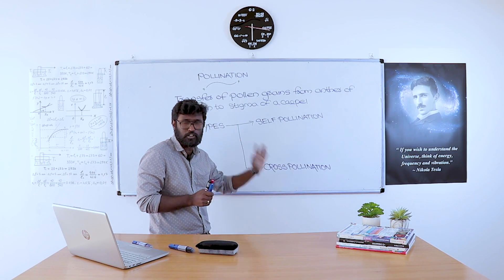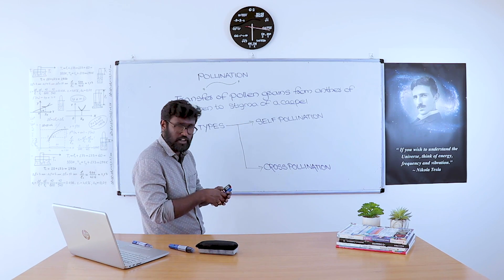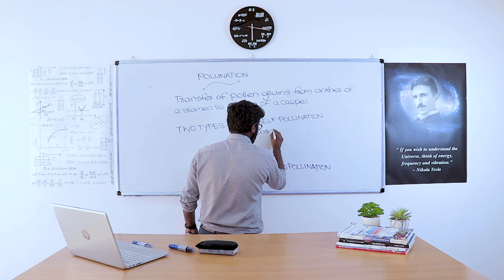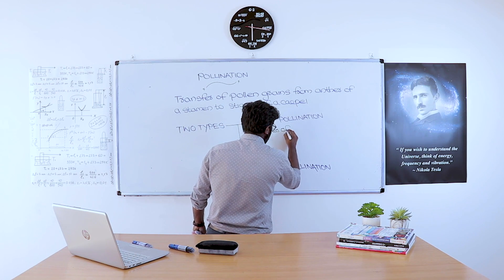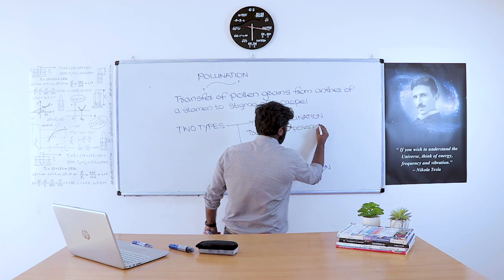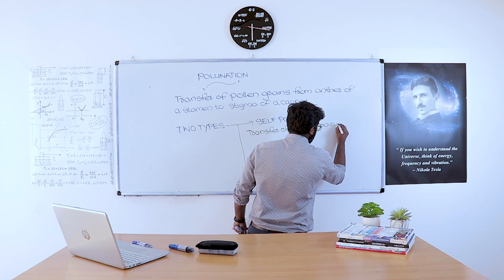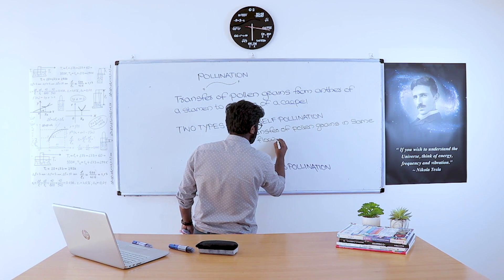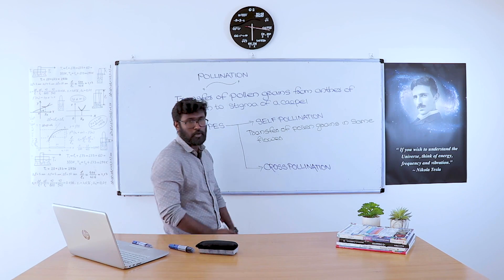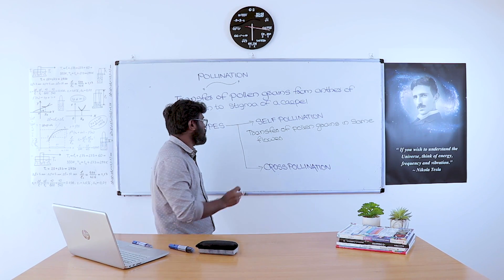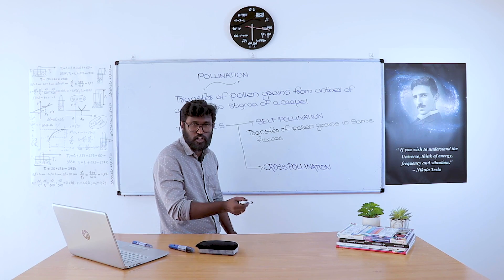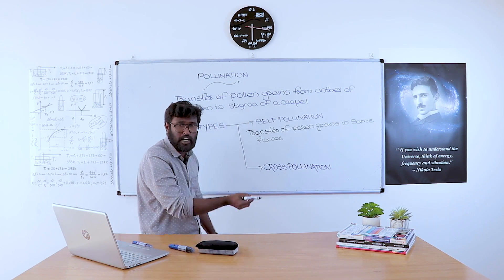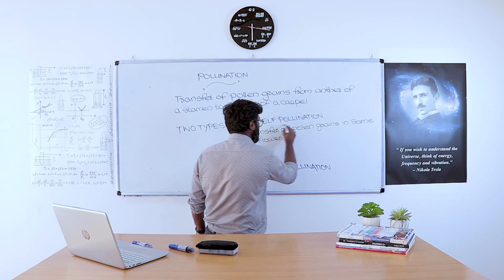What is meant by self-pollination? The transfer of pollen grains within the same flower is called self-pollination. That means the transfer of pollen grains from the anther of a stamen to the stigma of a carpel in the same flower is called self-pollination.